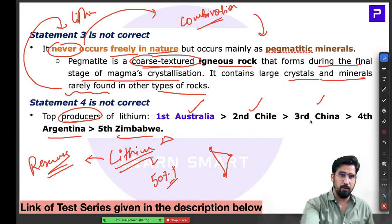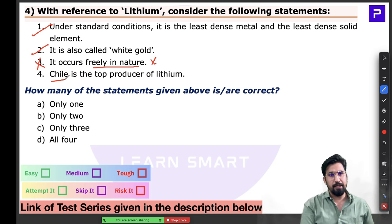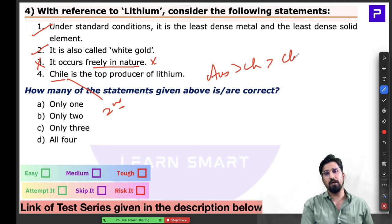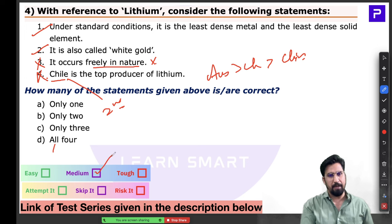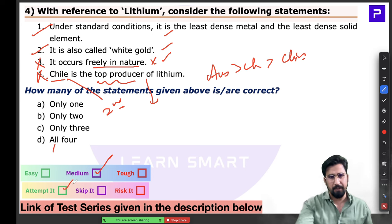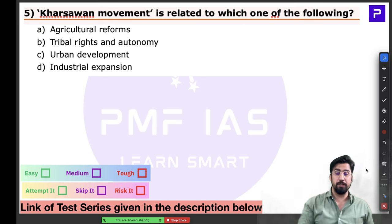Looking at the question: statements one and two are correct. Statement three is incorrect — lithium does not occur freely in nature. Statement four is also incorrect — Chile is number two in production, not number one; Australia leads production. The answer requires eliminating statements three and four. Medium-level question; statements one and two were easy, but statement four could be confusing if you conflate the Lithium Triangle reserves with production rankings.